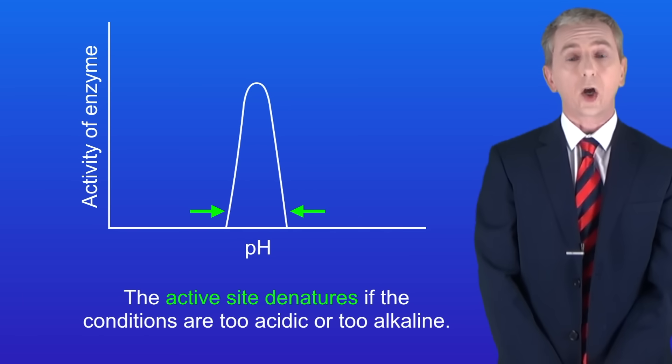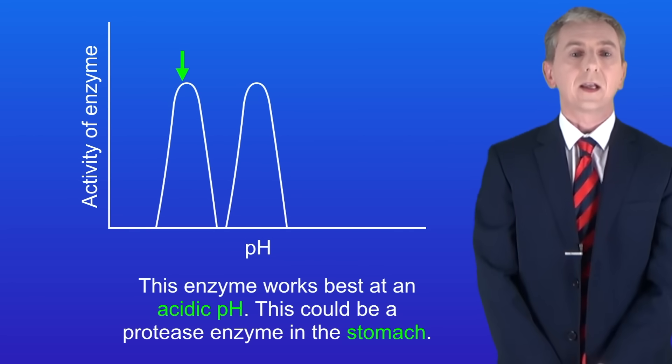Each enzyme has a specific optimum pH. So for example this enzyme works best at an acidic pH. This could be a protease enzyme in the stomach.